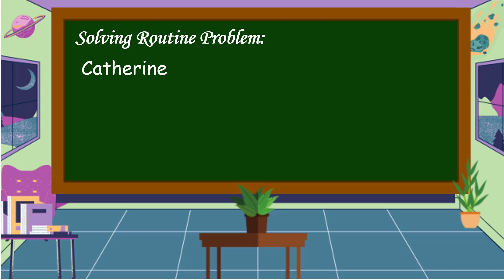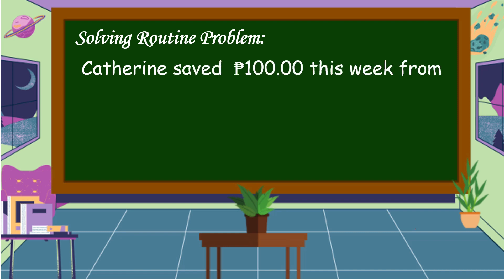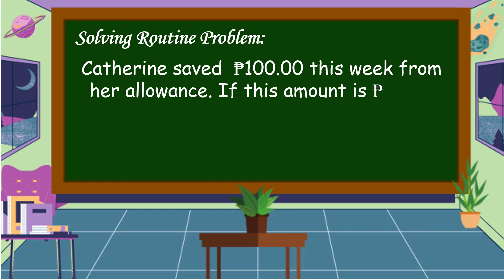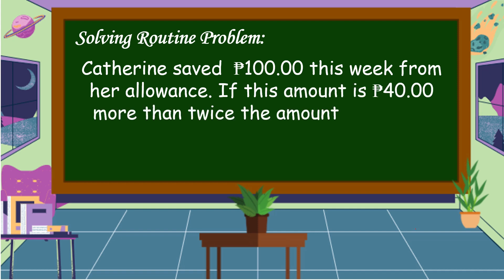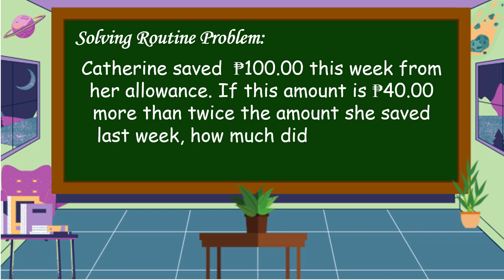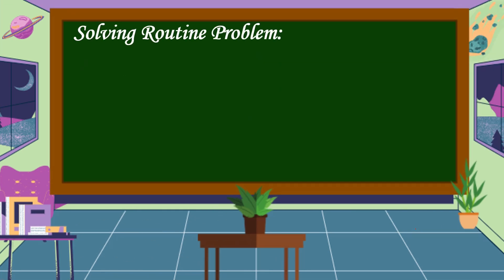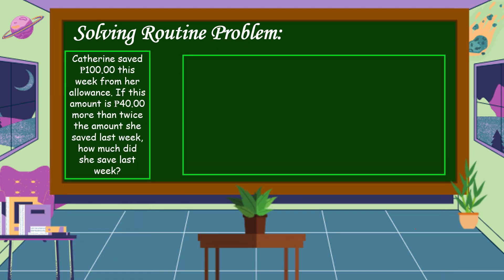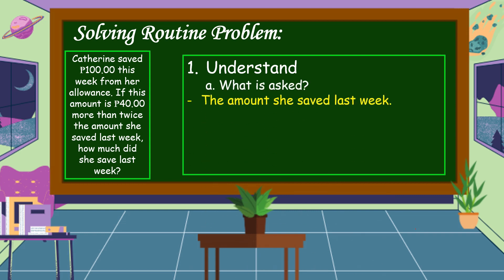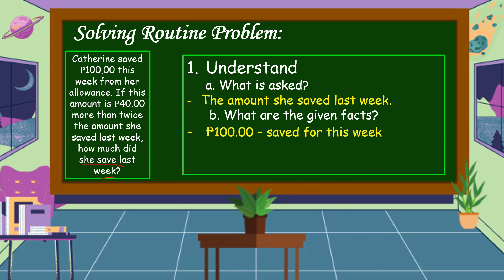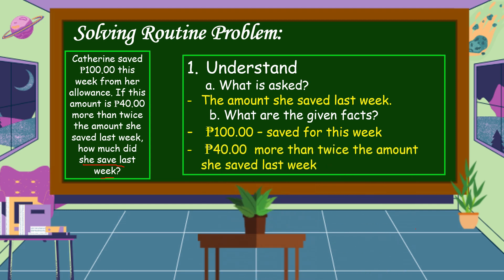Now let's solve a routine problem. Catherine saved 100 pesos this week from her allowance. If this amount is 40 pesos more than twice the amount she saved last week, how much did she save last week? To solve this, we'll use the 4-step plan. First, we understand the problem: what is asked is the amount she saved last week. The given facts are 100 pesos saved this week, and 40 pesos more than twice the amount saved last week.